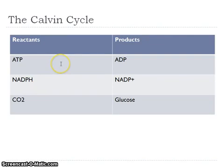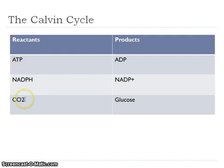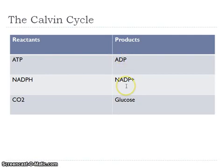Here's another chart that shows the reactants and products of the Calvin cycle. Our reactants are the energy molecules that store the energy we need — like ATP, NADPH, and the carbon dioxide that we're taking in through our stomata. We're producing ADP once we use up our energy, but we can reuse this because we can recharge it like a battery. NADPH works the same way. Our final product that we're shooting for is glucose that the plant can use.